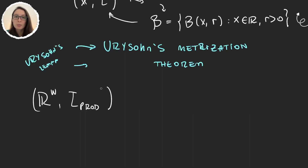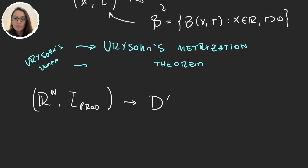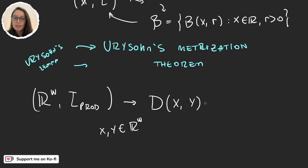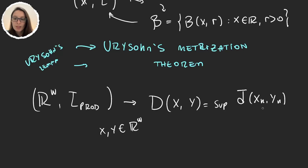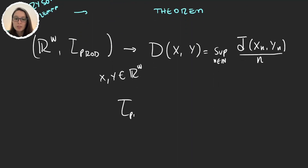In our last video we defined a new topology, the uniform one, from a metric. So obviously metric spaces induce a topology and that topology is metrizable. But now, given this topological space, is there a metric that induces the product topology? The answer is not trivial, but there is a metric. For X and Y elements in ℝ^ω, we define it as the supremum of the bounded metrics in each coordinate divided by the index, taken over all the natural numbers. This is very similar to the uniform metric. The objective will be to prove that the product topology equals the topology induced by this metric.